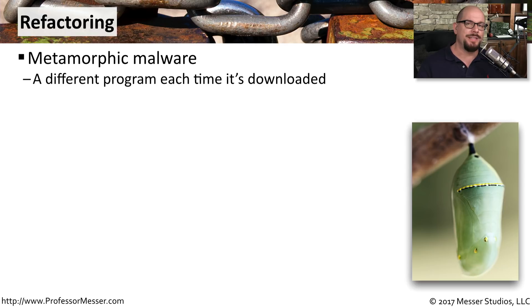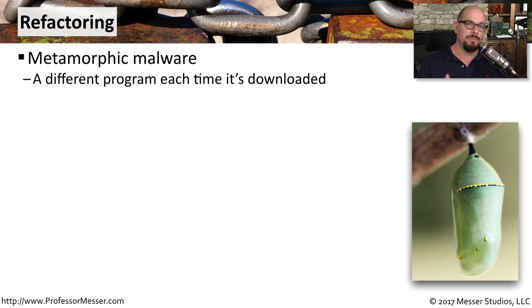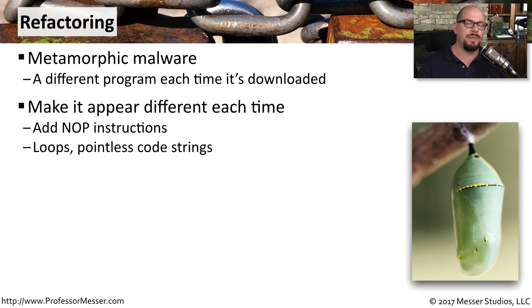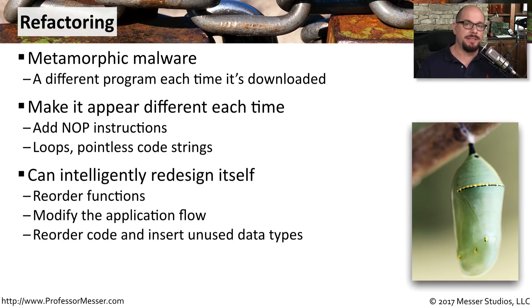Another technique that malware authors like to use is to change the way the malware looks every time it's downloaded. This is metamorphic malware — it's a technique called refactoring. Every time somebody downloads the malware, it's downloaded as a completely different executable. This means that if you're looking for something to be the same every time, for instance with an antivirus signature, this now becomes much more difficult to identify. The refactoring adds things like noops, which are no-operation methods, puts loops into the application, and adds code strings that have nothing to do with the operation of the malware — they're really just designed to make the malware look different. This refactoring process is very intelligent: it takes the malware and reorders all the functions, changes the actual flow of the application. The code is completely reorganized and becomes very difficult for a signature-based identification method like antivirus to identify as something malicious.